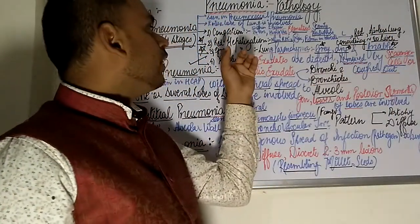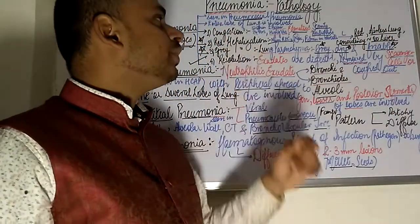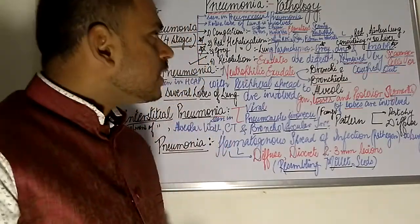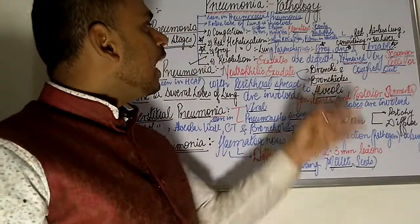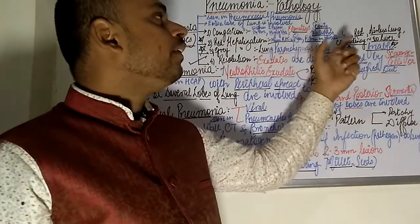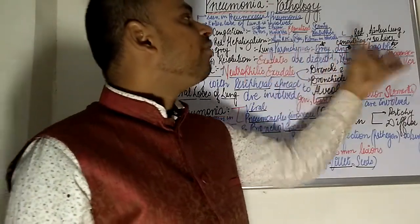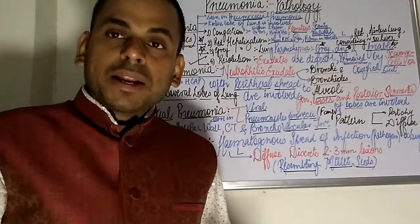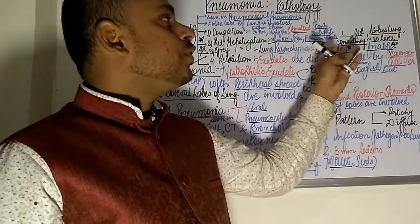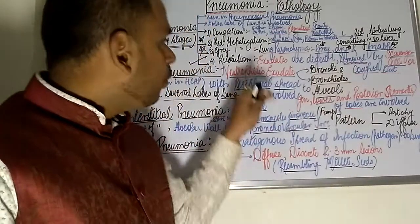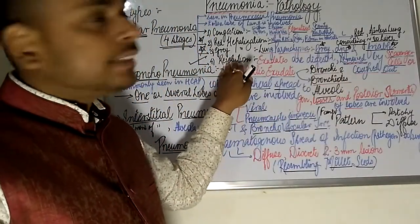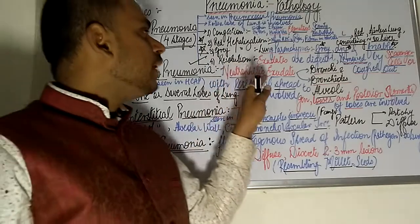The third stage is gray hepatization. In this stage, the lung parenchyma gives a gray, dry, and friable appearance. The lung parenchyma turns gray in color, becoming dry and friable.